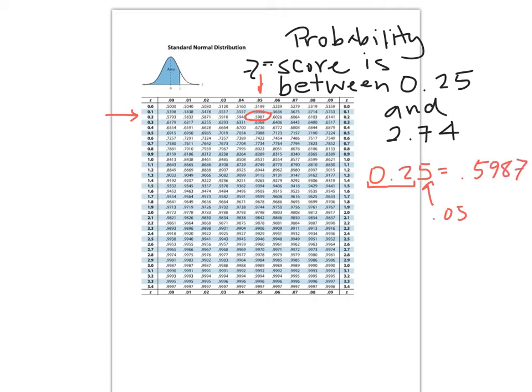And then 2.74 z-score. Once again, we're looking for 2.7. Let me actually go ahead and undo what I just wrote. I'm going to change my color of my pen to blue. 2.74. I'm going to look for 2.7, which is right there. And then my last digit will be in my hundredths place. 0.04 will be that column right there. When I join this row to 2.7 and the column 0.04, I will get 0.9969.